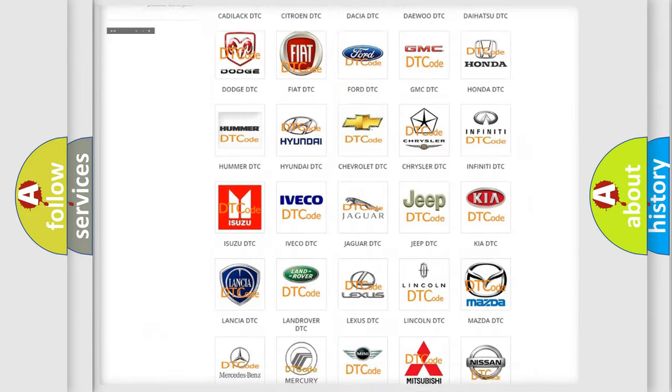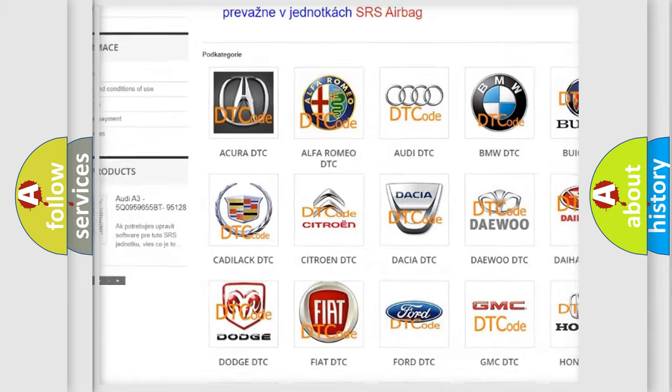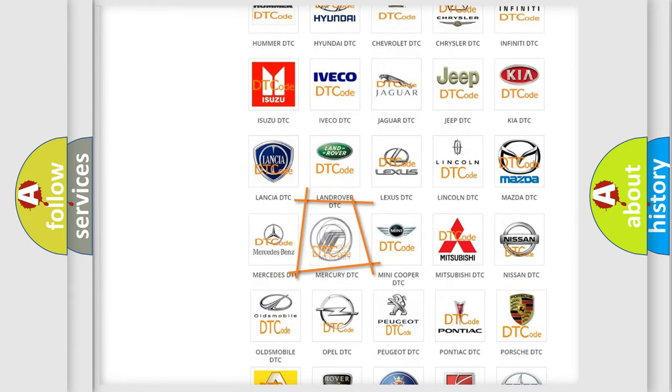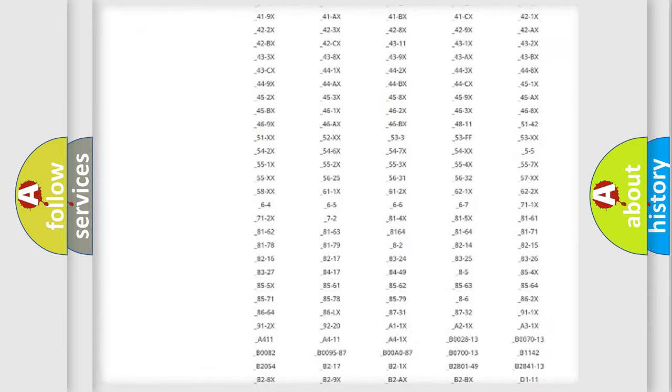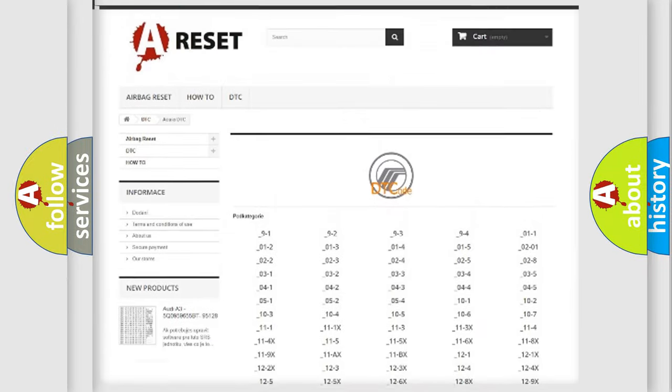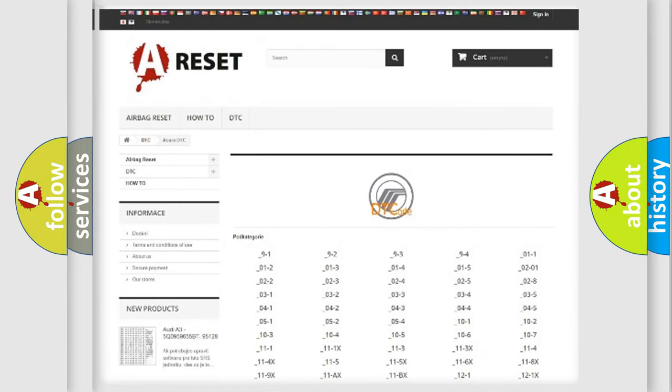Our website airbagreset.sk produces useful videos for you. You do not have to go through the OBD2 protocol anymore to know how to troubleshoot any car breakdown. You will find all the diagnostic codes that can be diagnosed in Mercury vehicles, and also many other useful things.